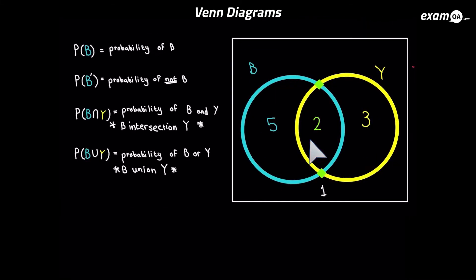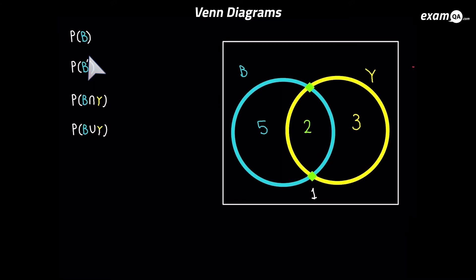Now we're going to look at some questions with P in it. All P means is 'work out the probability'. So before we simply had B; now we want the probability of B. Let's do the first one — the probability of B. Which numbers belong to B? It's the 5 and the 2.